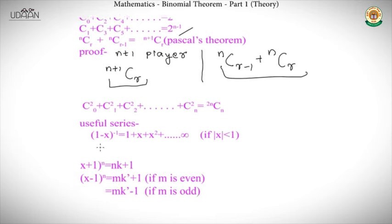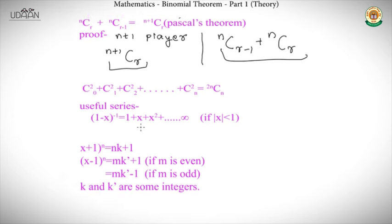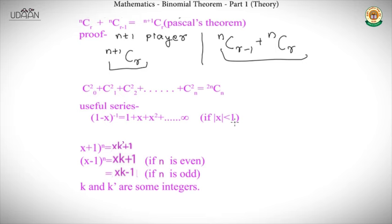Some useful series to recall: the summation of a GP, 1 + x + x² + ... to infinity equals 1/(1 − x), with the condition that |x| < 1. This was covered in geometric progressions; the condition ensures the limit as terms approach infinity exists.